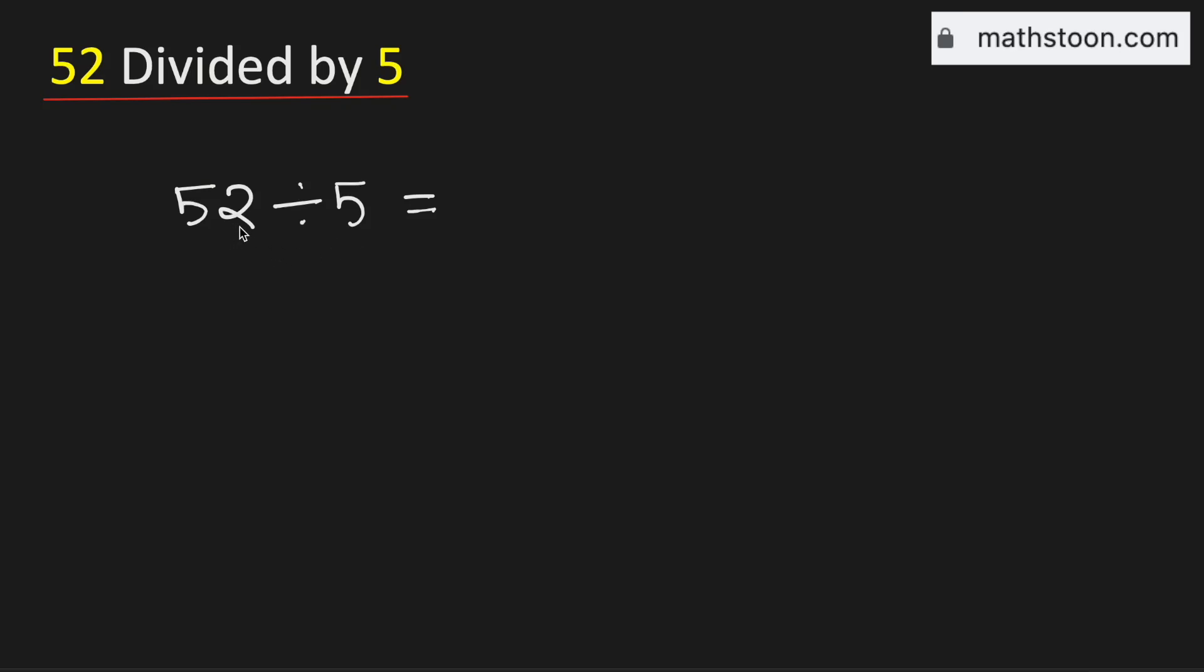In this video, let us find the value of 52 divided by 5 using the long division method. Consider the first digit 5. 5 times 1 is 5. Subtract, we get 0.